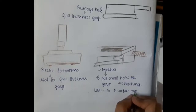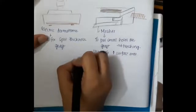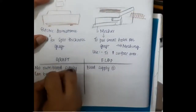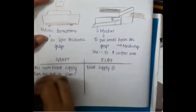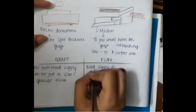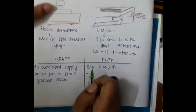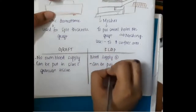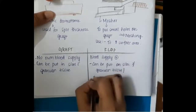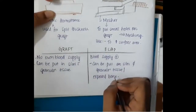Now we will learn the differences between a graft and a flap. A graft does not have its own blood supply, whereas a flap has its own blood supply. A graft can be placed in sites with granulation tissue, whereas a flap can be placed in sites even without granulation tissue, or even over exposed bone.